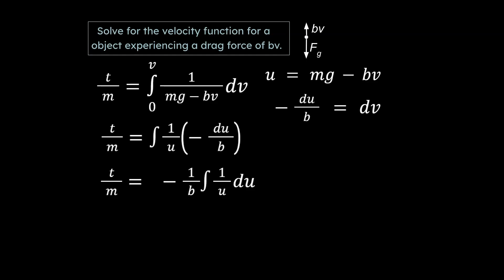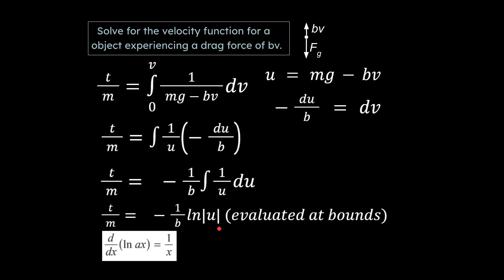We substitute u for the denominator and substitute in the expression for dv. This gives us an integral of 1 over u with respect to u, which equals the natural log of u. That's a standard rule of working with integrals and natural logs. One way to notice this: on your equation sheet, the derivative of ln(ax) is 1 over x — this is the reverse. So if you integrate 1 over u you get ln of u. That's how you can justify it or spot it from your equation sheet.